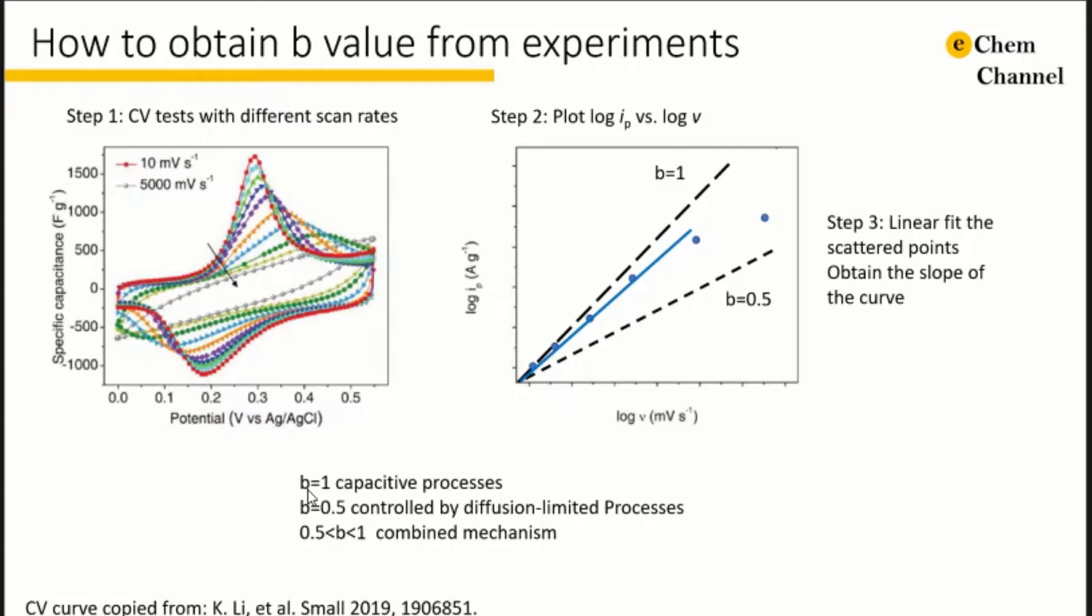If b equals 1 it means capacitive. b equals 0.5 means it is diffusion controlled. Usually we will find that the b value is in between 0.5 and 1. It means a combined mechanism between capacitive and diffusion controlled process.